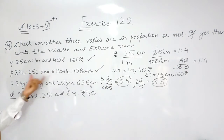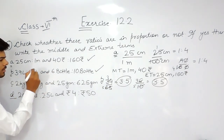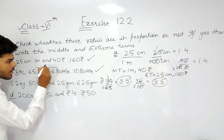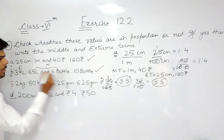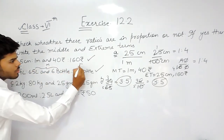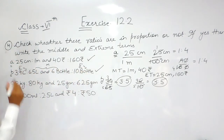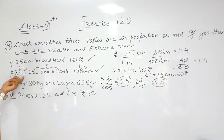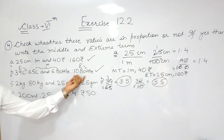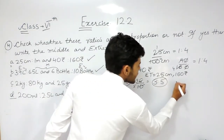Now we will write the middle and extreme terms. These two in the center are the middle terms, and the outer two are extreme terms. The middle terms are 65 meters and 6 bottles. The extreme terms are 39 meters and 10 bottles.